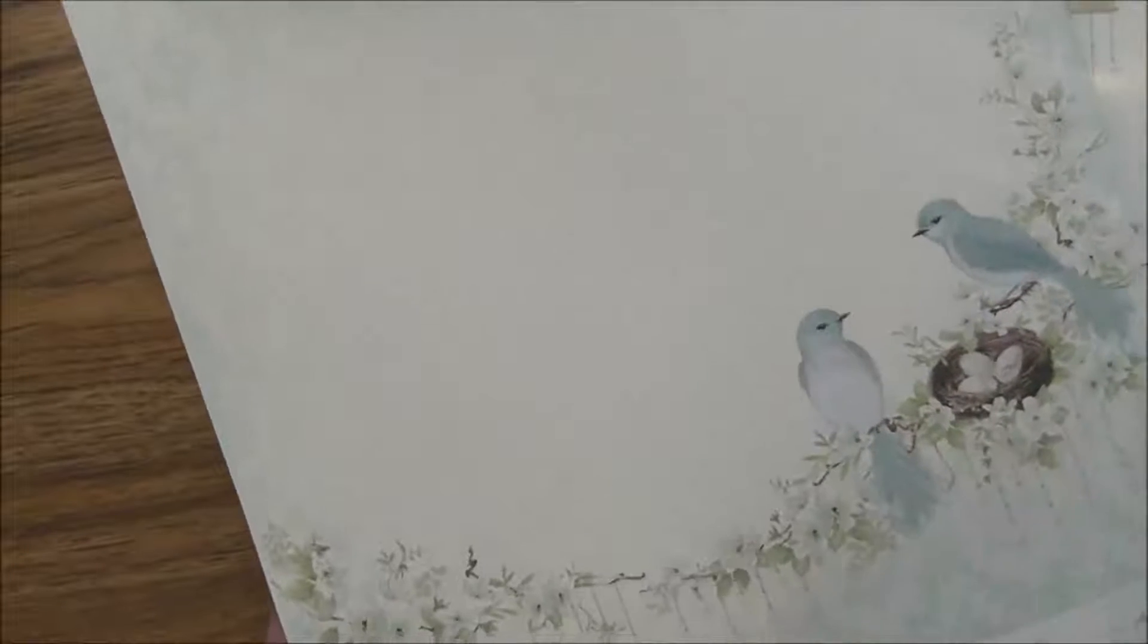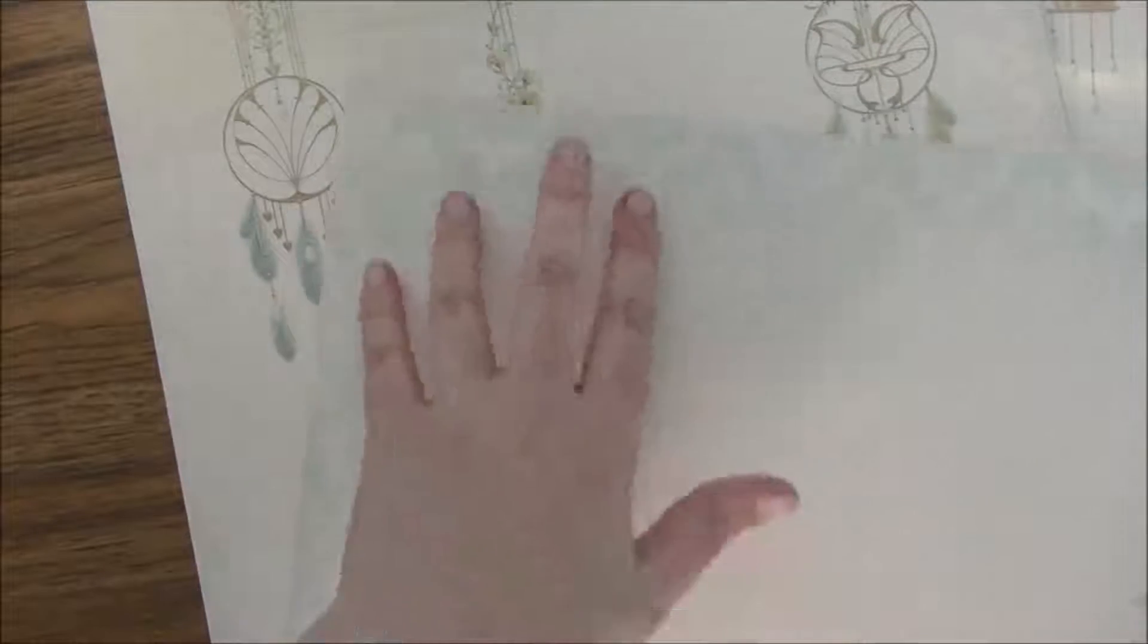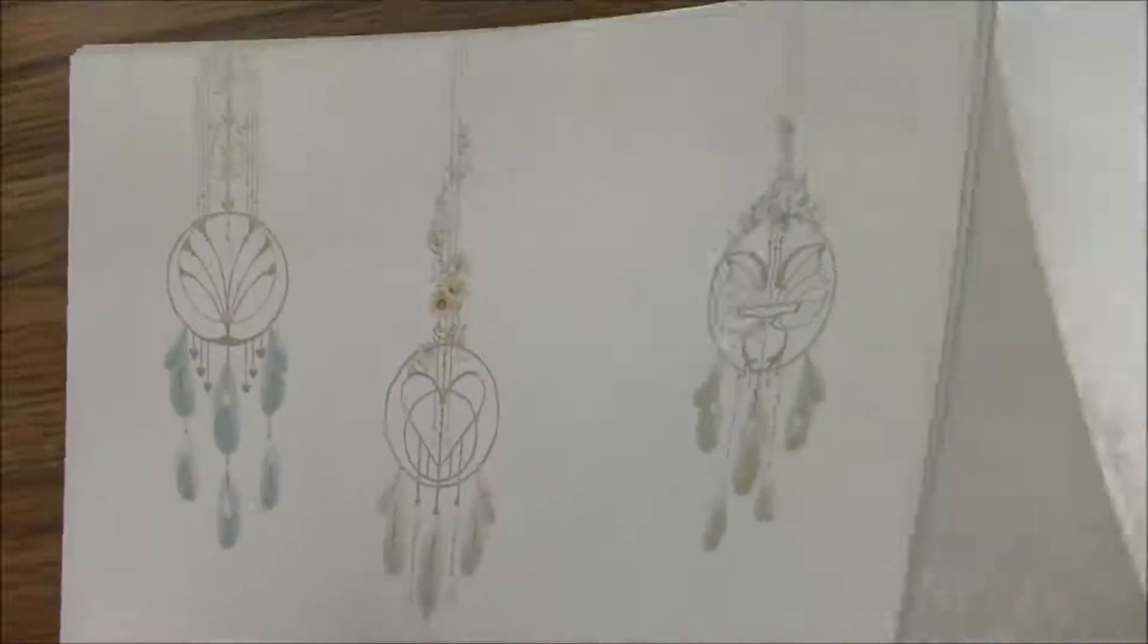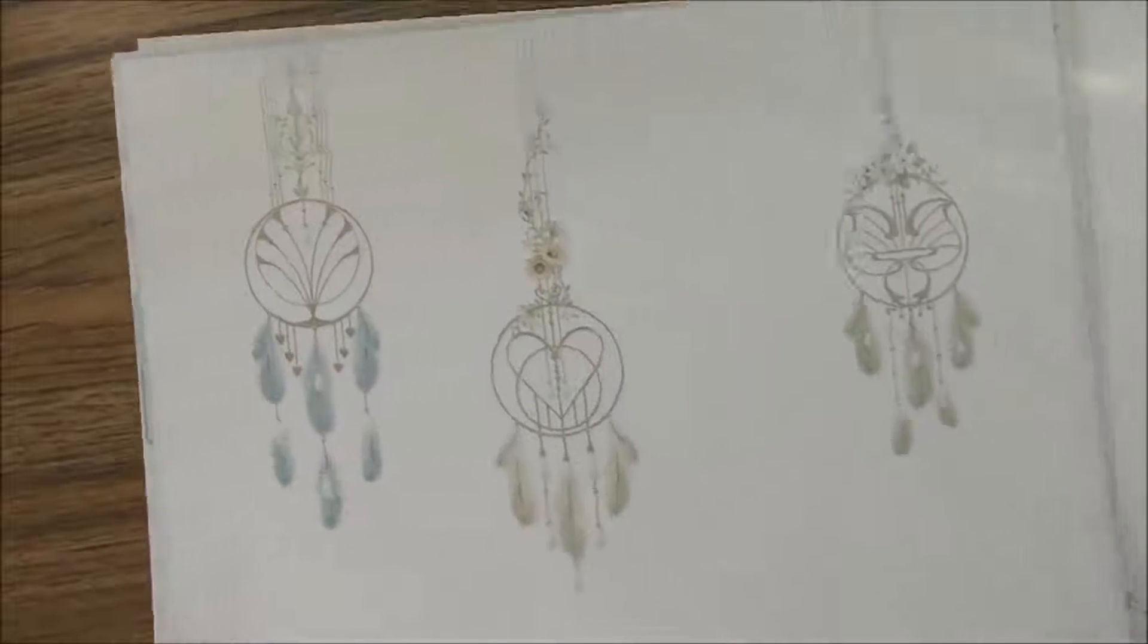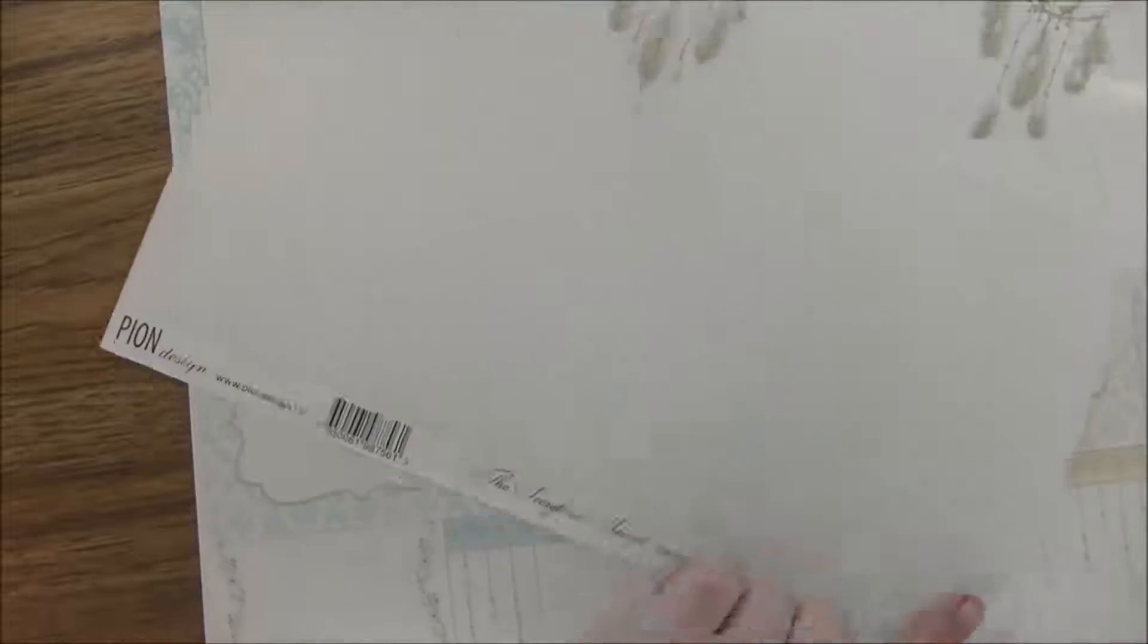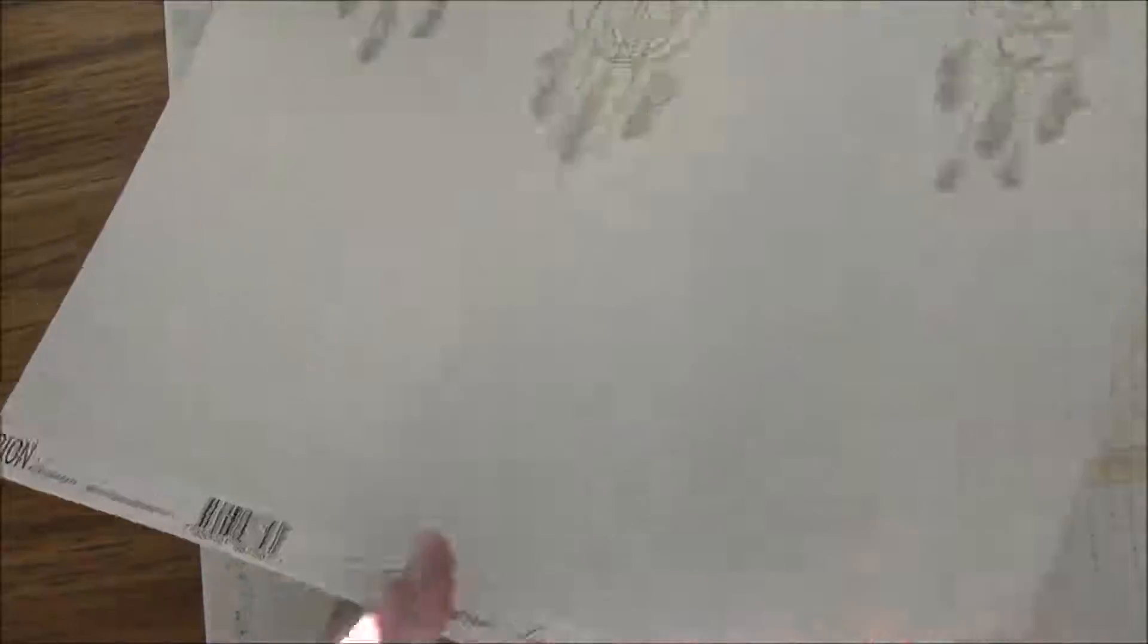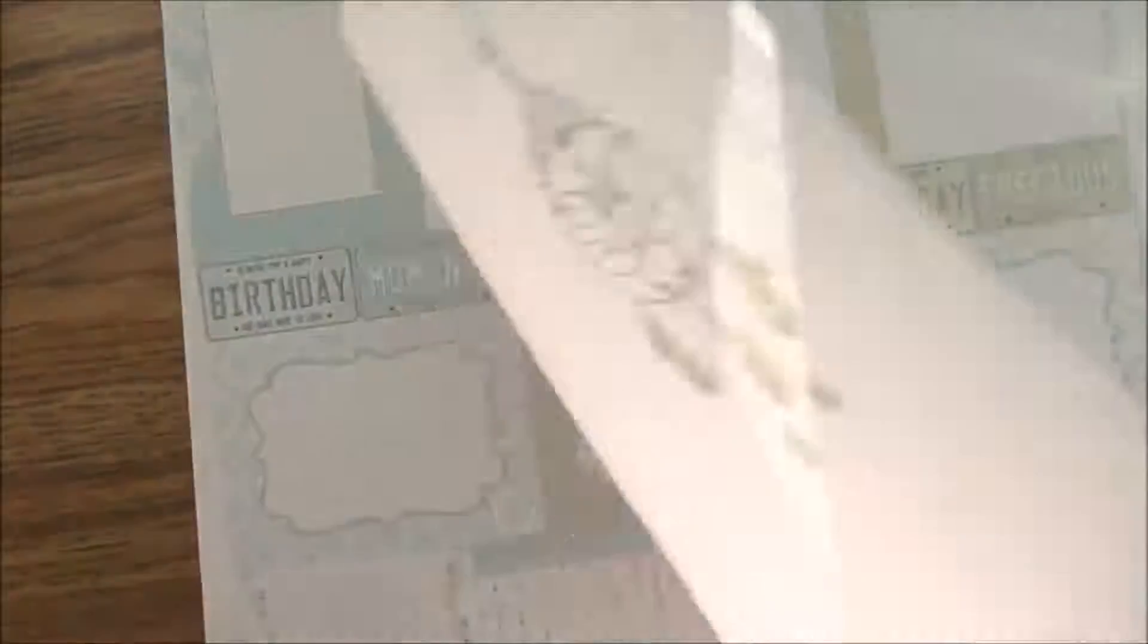Then we have these birds - they've got the little nest and there's some blue fading into the cream background here. The back side is that same pattern just in blue. Then we have some beautiful dream catchers along the top and then that pattern constantly fading into the cream-based papers here. The back is again that pattern, this time in green.